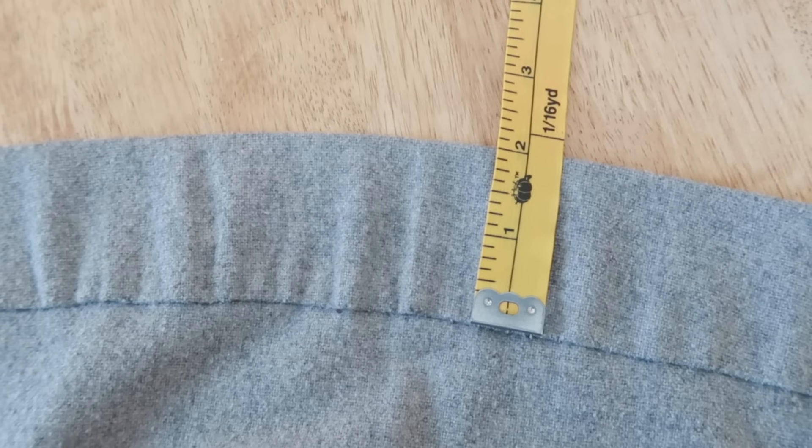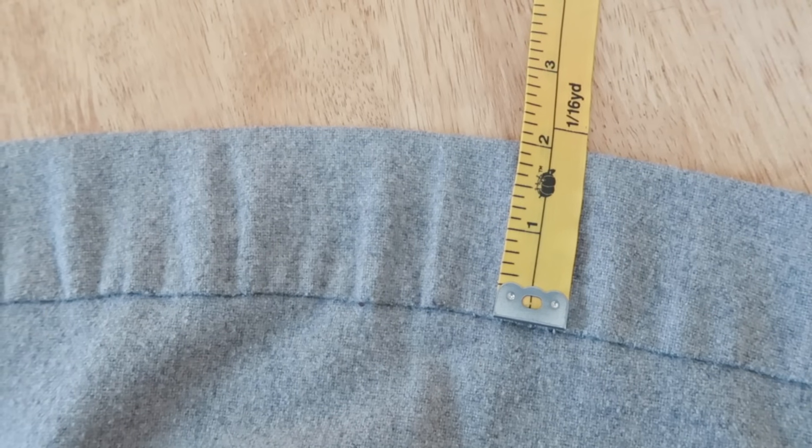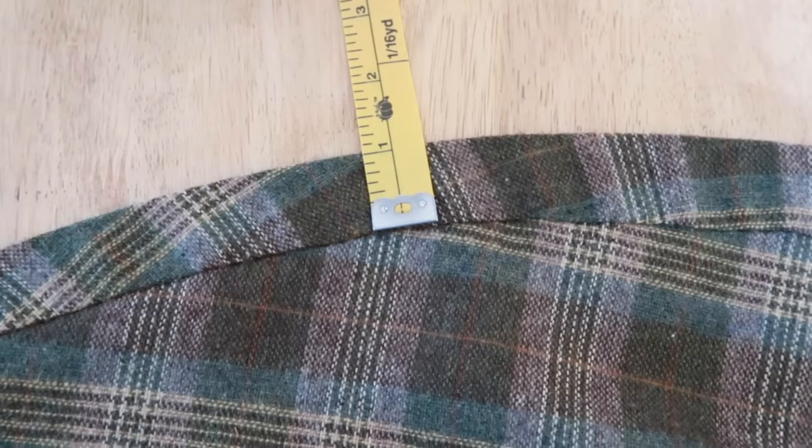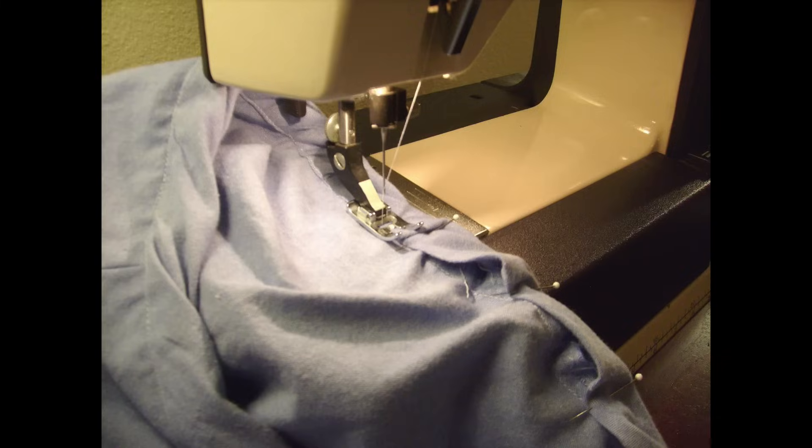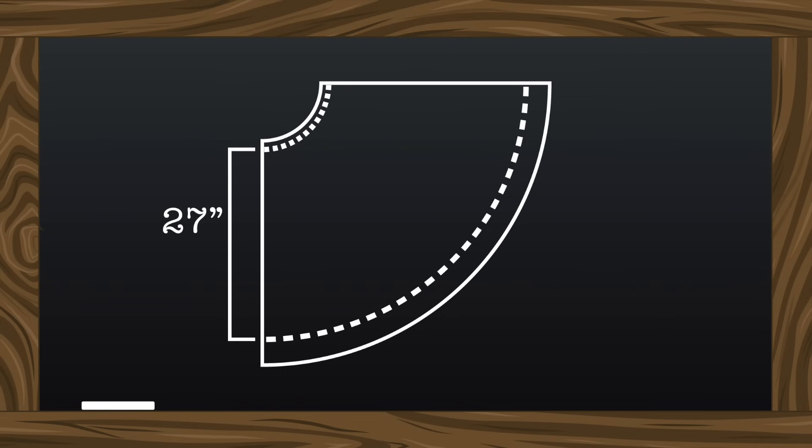I prefer nice wide hems, but if you're making a circle skirt or any kind of flared skirt, keep in mind that a narrow hem will stitch best, with the least amount of puckering, tucking, and twisting. So I would recommend allowing no wider than an inch for the hem.